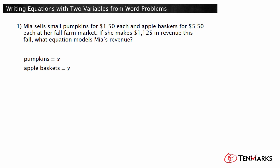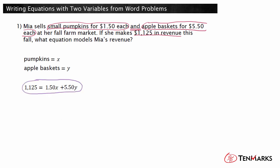Now let's write an equation. This word problem represents a revenue function. Mia's revenue is a sum of two amounts: revenue from pumpkins sold plus revenue from apple baskets sold. The total revenue is equal to the number of pumpkins times the price per pumpkin, plus the number of apple baskets times the price per basket. This equation models Mia's revenue.